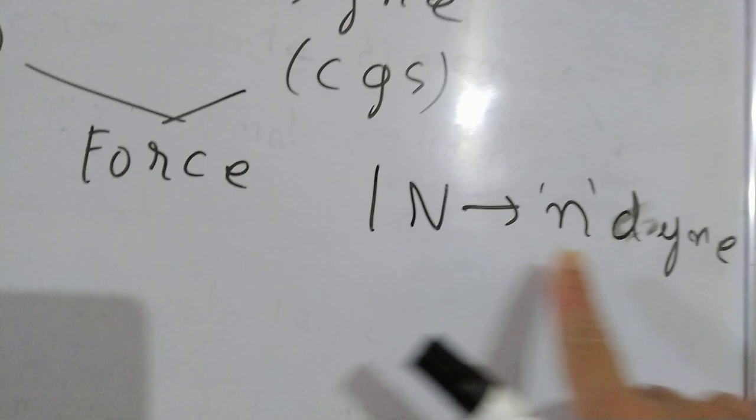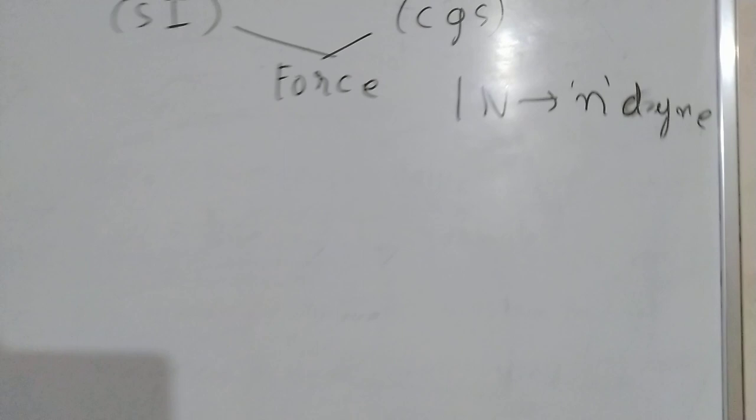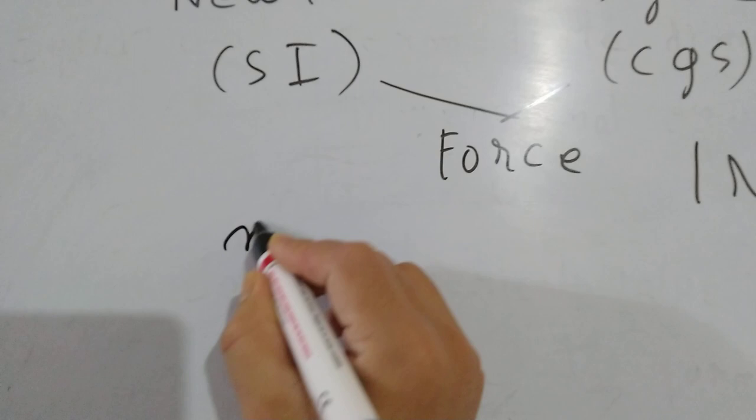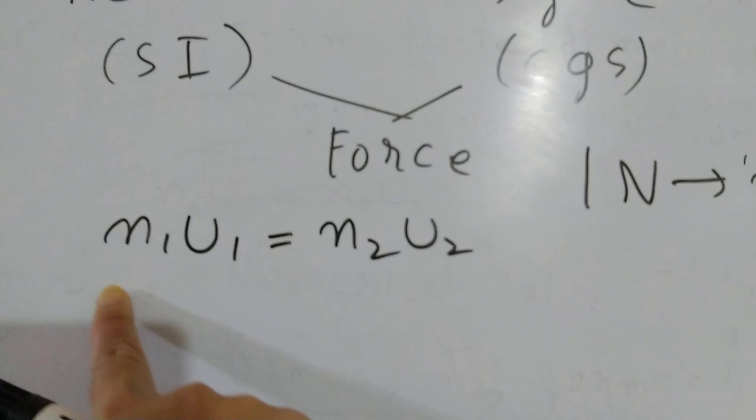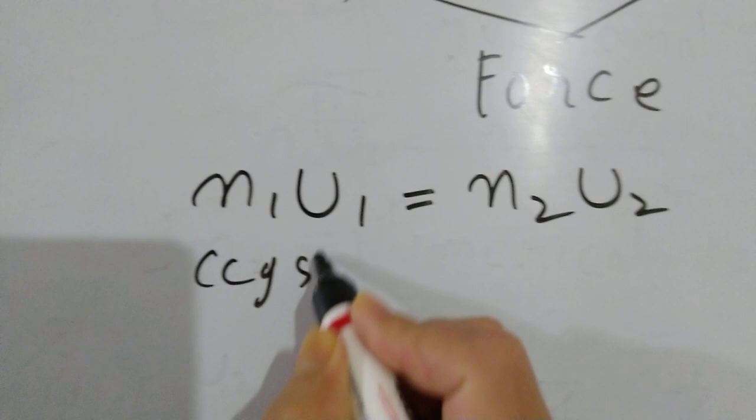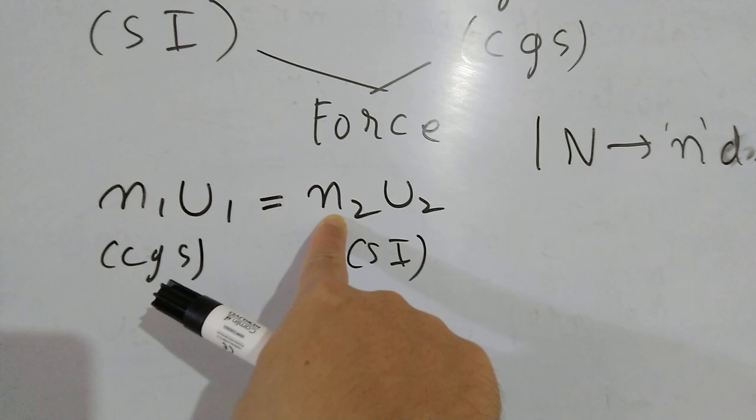In CGS unit system, you need to find the N value using the principle of homogeneity. The equation is N1 U1 = N2 U2. So you can convert from SI unit system to CGS unit system — converting N1 and N2 as numerical values, and U1 and U2 as the dimensional formulas.